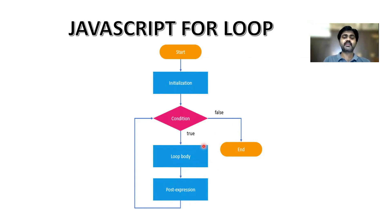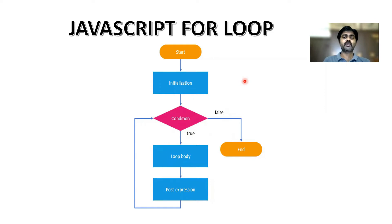Now we will check the for-in code with an example. This is the flowchart for the JavaScript for loop: start, then first initialization. After that, we check the condition. If true, we go to the loop body, then post expression, and the condition is checked again. Once the condition is false, we come to the end. That's the JavaScript for loop.